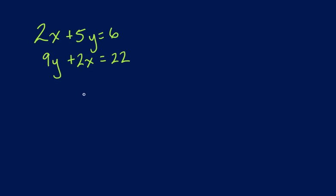So when solving for the substitution method, and we have something that looks like this, we have 2x plus 5y equals 6, and 9y plus 2x equals 22.